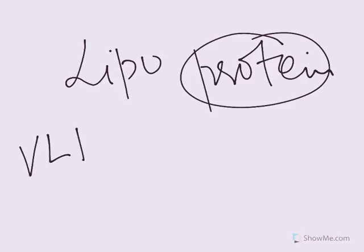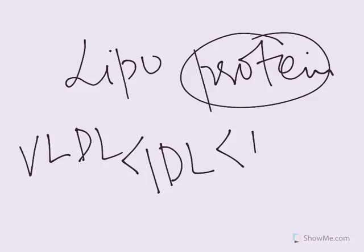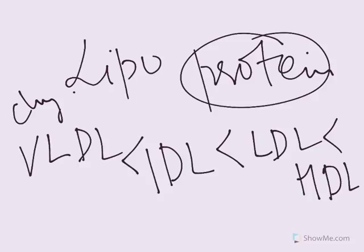Very low density lipoprotein, intermediate density lipoprotein, and then low density lipoprotein and then high density lipoprotein simply means that in increasing order they have more protein. And of course chylomicrons are also there.